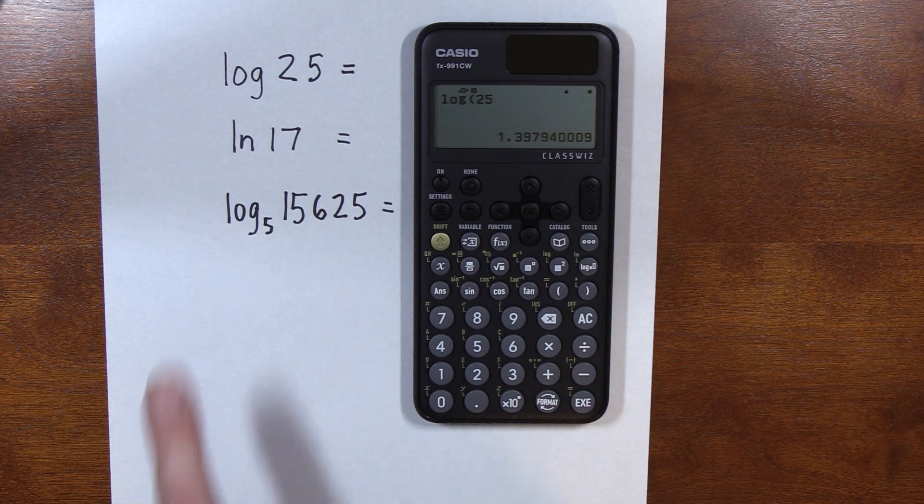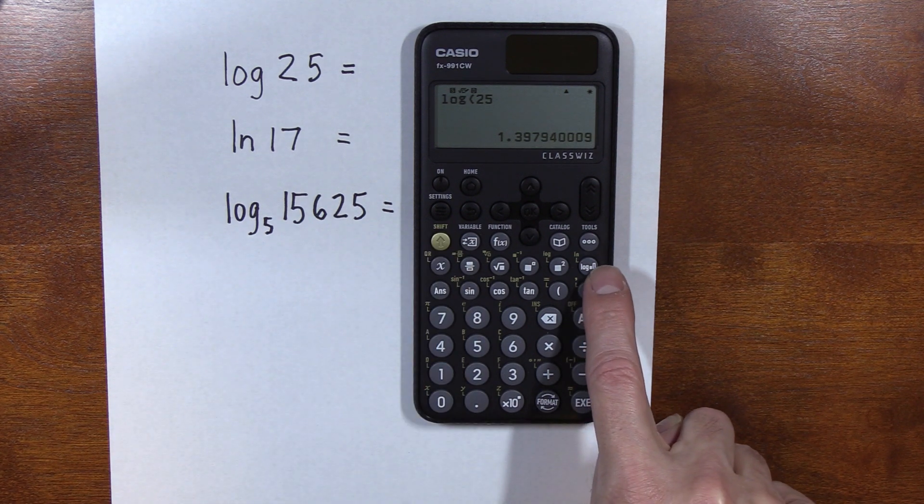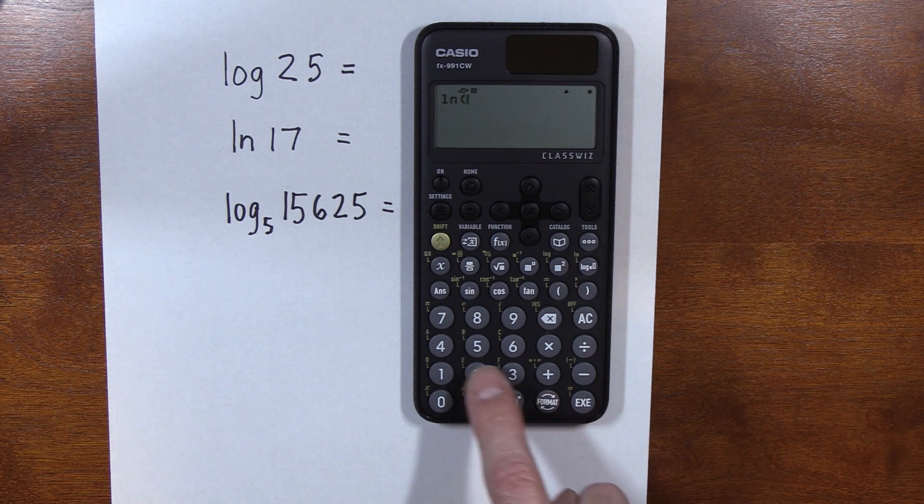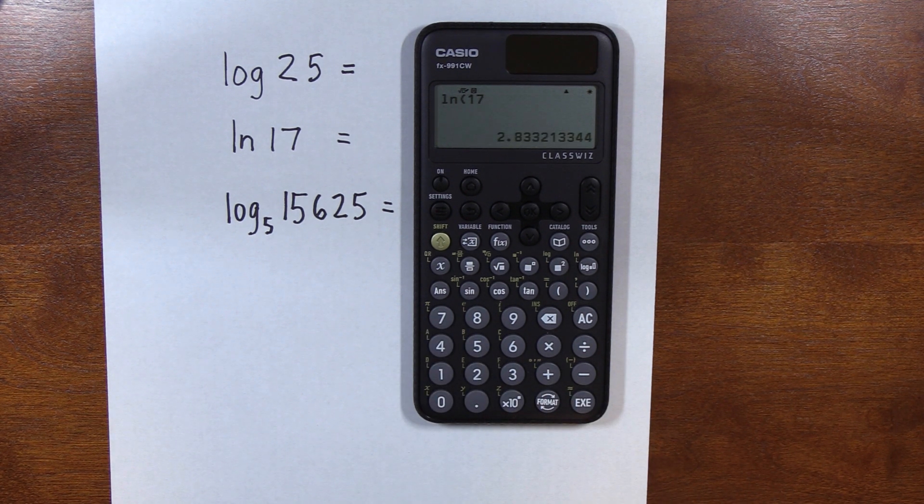Natural log of 17. So we hit shift, and we're going to hit this button here. It says log, but we're actually doing the gold natural log of 17. No need for parentheses, I just hit equal, got my answer.